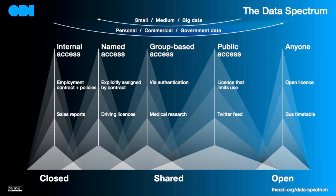In open data, we use open licenses, but when we're sharing data, we use other forms of contract and agreement that describe how data can be shared and how it can be used. An open license gives complete freedom for someone to use data for any purpose at all.